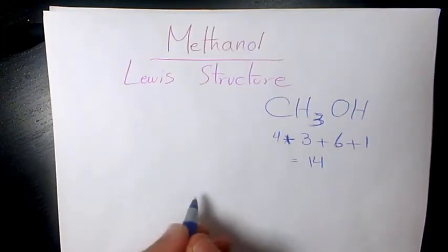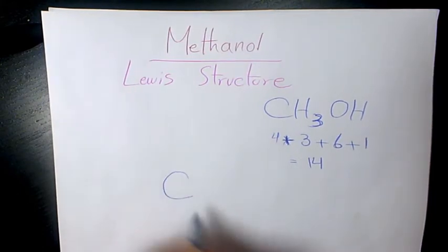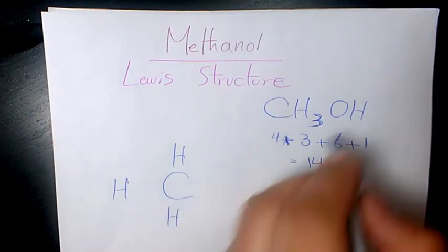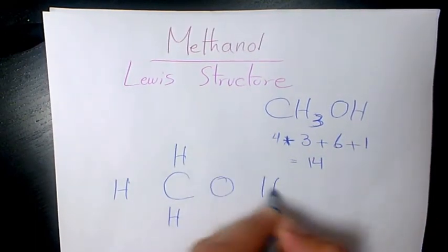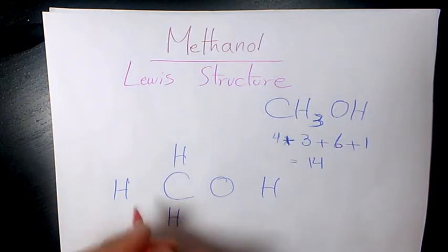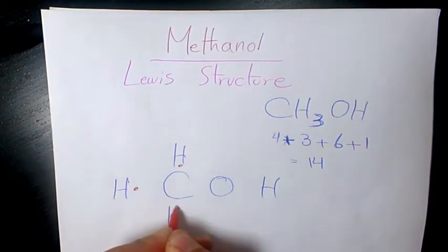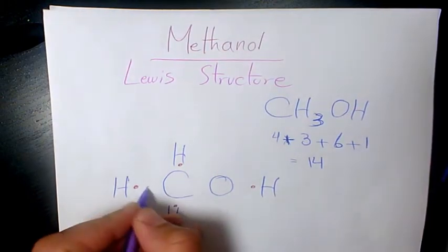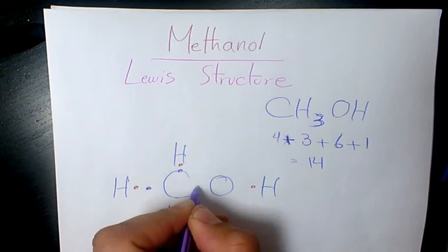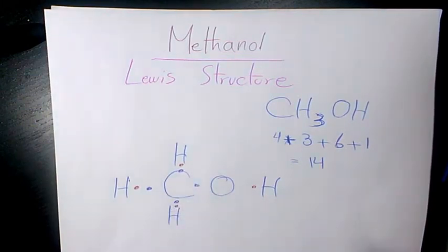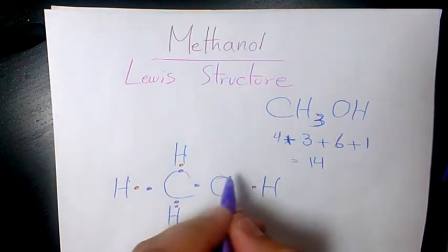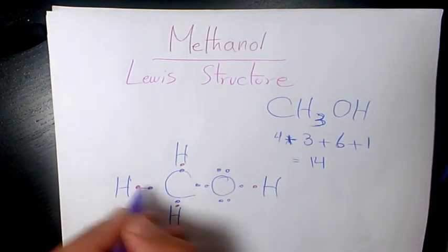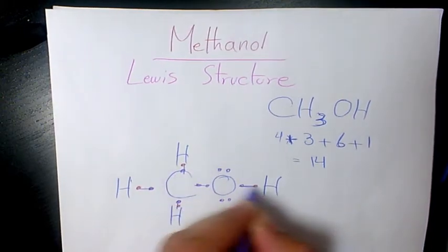For the Lewis structure I'm going to have C in the middle, and hydrogen, hydrogen, hydrogen around it. And here we have OH, so I'm going to write it like that. We have 1 electron for all these hydrogens, and from carbon we have 1, 2, 3, and 4. And we form 1 bond, 1 bond, 1 bond, 1 bond, and 1 bond.